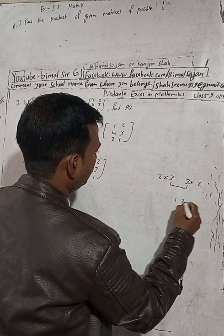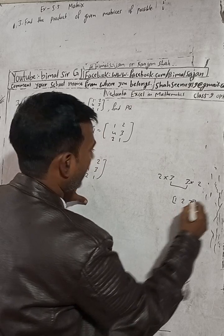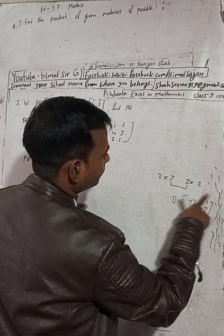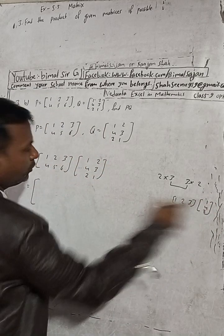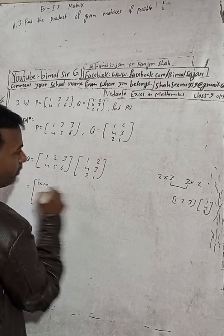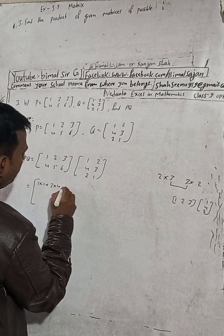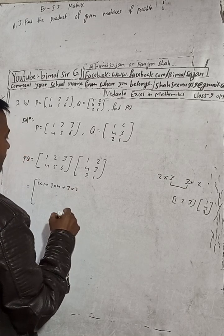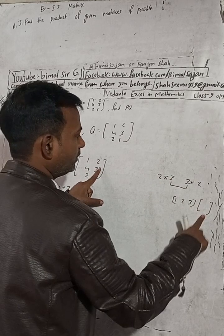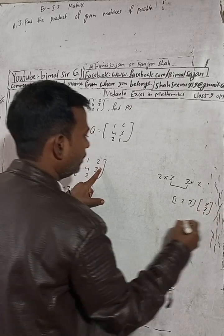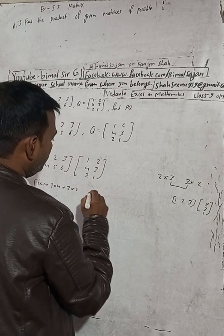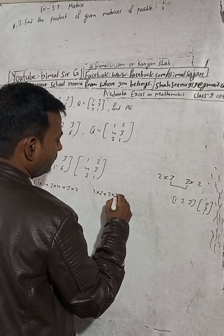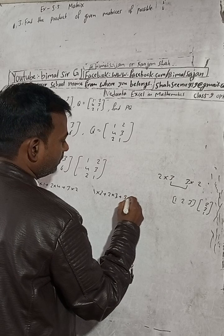To get the first element, take the first row of P — 1, 2, 3 — and the first column of Q — 1, 4, 2. That gives 1×1 plus 2×4 plus 3×2. For the second column, the column is 2, 3, 1, so we compute 1×2 plus 2×3 plus 3×1.